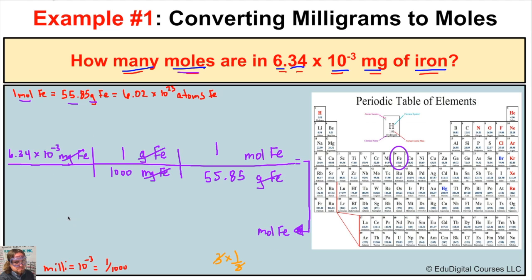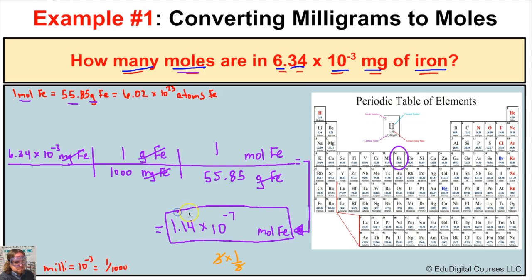Now we solve using the calculator, starting with our known quantity and working left to right. Any number other than one in the denominator we divide by. So we take 6.34 times 10 to the negative third, divided by 1,000, divided by 55.85, and we get 1.14 times 10 to the negative seventh moles of iron. So 6.34×10⁻³ milligrams of iron equals 1.14×10⁻⁷ moles of iron.